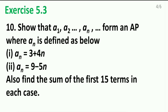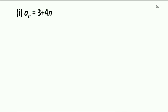This is Exercise 5.3, Question 10: show that a1, a2, till an form an AP, where the nth term is defined as given. They have also given the first and second formulas. We need to find the sum of the first 15 terms in each case. In short, we need to show that this is an AP and then find the sum of the first 15 terms.